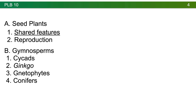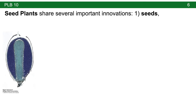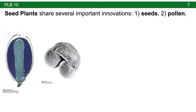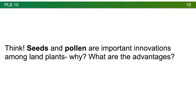In order to better understand the gymnosperms we need to first focus on the shared characteristics of seed plants. Gymnosperms and angiosperms are collectively referred to as the seed plants. If you look at this phylogeny you can see that the gymnosperms and angiosperms are each other's closest relatives, and they in turn are more closely related to the manilophytes. But remember that manilophytes don't make seeds — only gymnosperms and angiosperms make seeds. Seed plants share several important innovations: seeds, pollen, secondary growth, and heterospory. Take a moment to consider why seeds and pollen are such important innovations among land plants and what their advantages are.